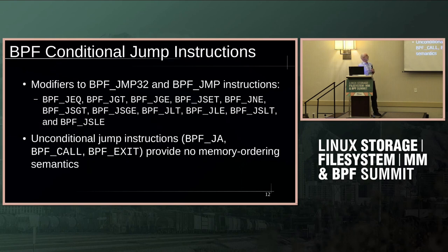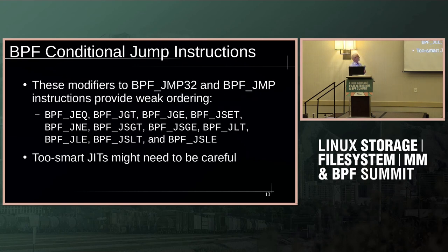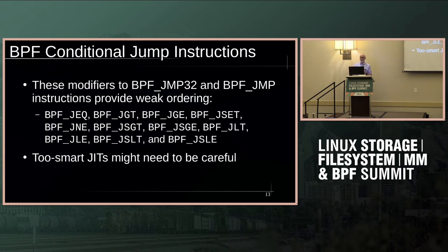We also have jump instructions. Unconditional jump instructions have no ordering effects whatsoever. However, if you're doing a conditional branch, there's some funny weak ordering that ends up being important for control dependencies, which are used in a few places in the Linux kernel and are expected by the Linux kernel memory model. That means you have to be a little careful just how aggressively you optimize once you've got the actual BPF instructions.